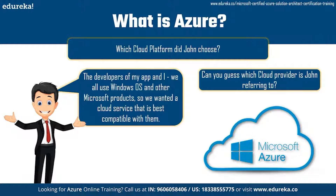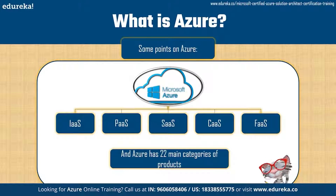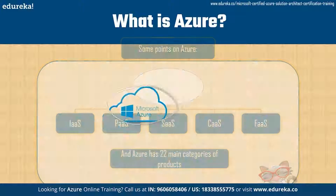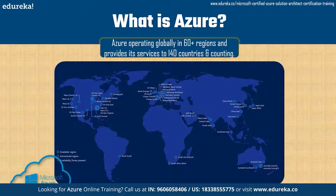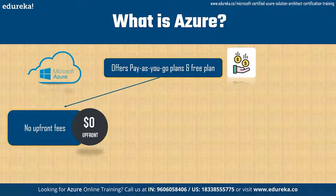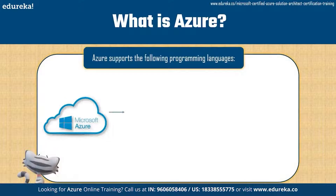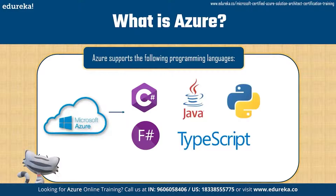Just like every other cloud platform, Azure provides five distinct types of services: Infrastructure as a Service, Platform as a Service, Software as a Service, Container as a Service, and Functions as a Service. Azure has 22 main categories of products and operates globally in 60-plus regions, providing services to 140 countries and counting. Azure provides pay-as-you-go plans with no upfront fees, and you only pay for the time your services are running. There is also a free basic plan valid for 12 months. The programming languages supported on Azure include C#, F#, Java, TypeScript, and Python.